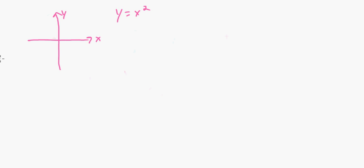If I drew a parabola here — y equals x squared — what we're going to do is find the derivatives. A derivative is the gradient at any point on a function that's not linear. So if you looked at the tangent line here at the top, the gradient there would be zero — a horizontal line.